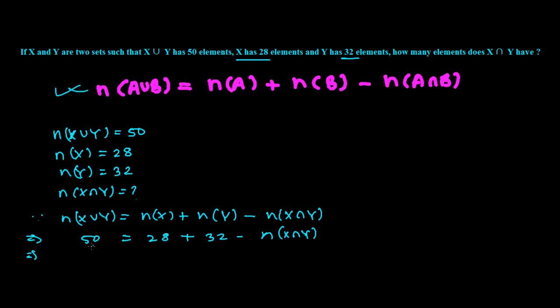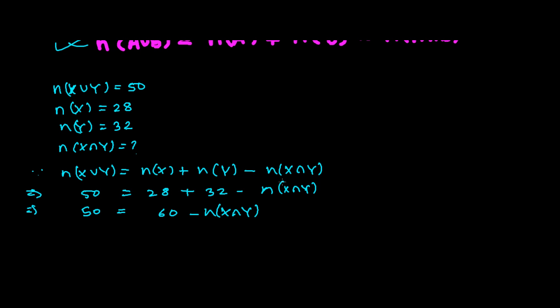So now see it is 50, and 28 plus 32, how much is it? 8 plus 2 is 10, and 3 plus 2 is 5 and 1 is 6, so 60 minus n(X intersection Y). So now we can easily find out our X intersection Y. So n(X intersection Y) is going to be, this is minus, so it went this side, so it becomes positive. And now it will be 60 minus 50, that is going to be 10.